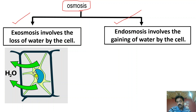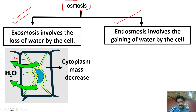Dear students, aap is picture ko ghaur se dekhein. Is cell se paani bahar ja raha hai — the cell is losing water — toh is ko hum Exosmosis kahenge. Aur jaise hi paani bahar chala jayega, protoplasm ka mass decrease ho jayega, cytoplasm mass decreases. Kyunki cytoplasm mein bahut zyada amount water ka hota hai, aur jab bahut zyada water bahar chala jayega, toh cytoplasm ka mass decrease ho jayega, protoplasm shrink ho jayega.